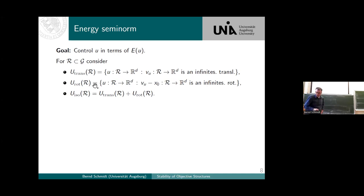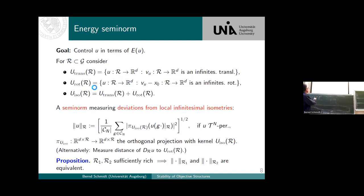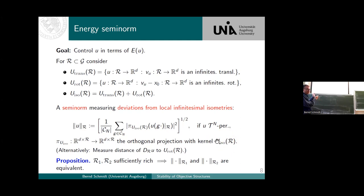Now let us define what it means to be locally close to an isometry — an isometric deformation. We define the following semi-norms: that's our displacement. We go over all representatives of the periodicity, and now take a test set R which defines the local neighborhood. We transport everything to the actual position G we consider, and then take the orthogonal projection. If something is a linearized isometry, we don't pay; but the orthogonal direction pays. So we take this orthogonal projection, and everything orthogonal to the linearized isometries is penalized.